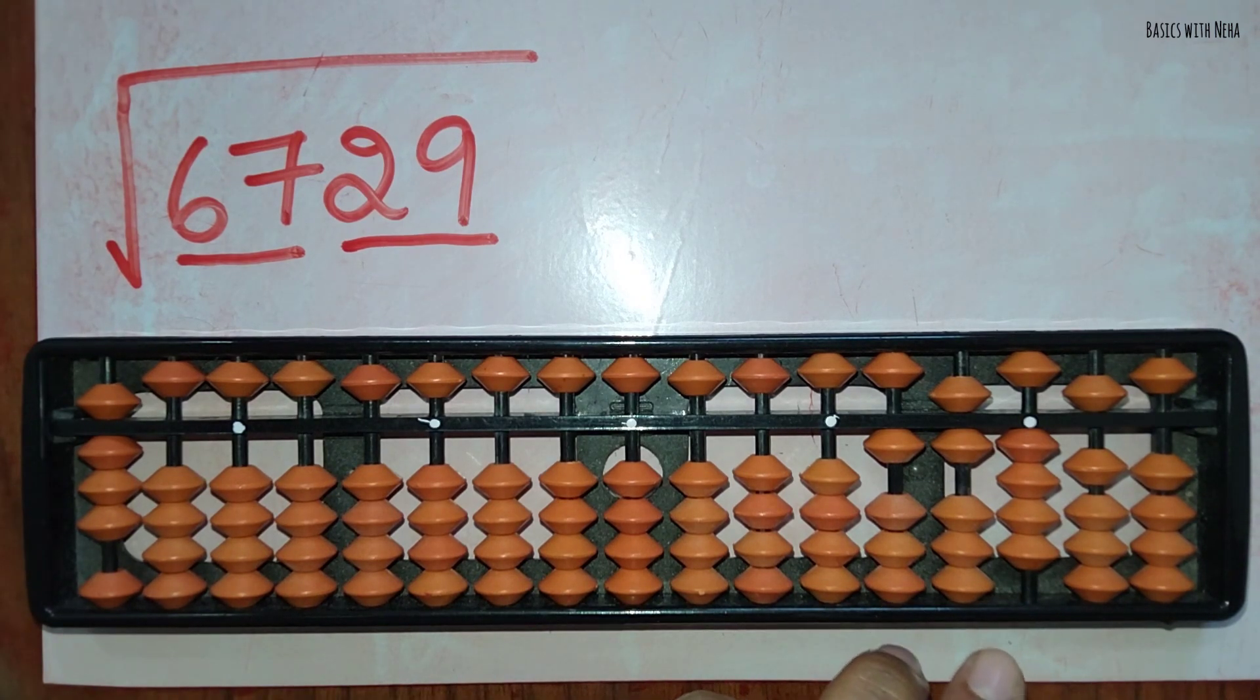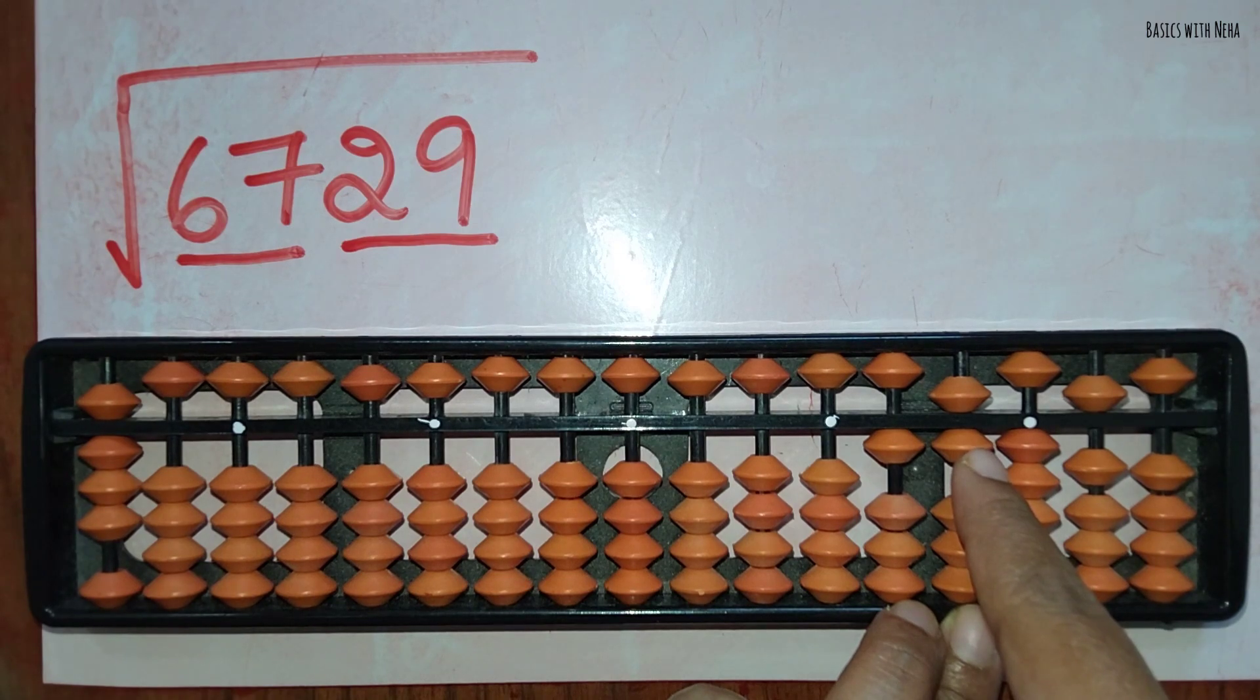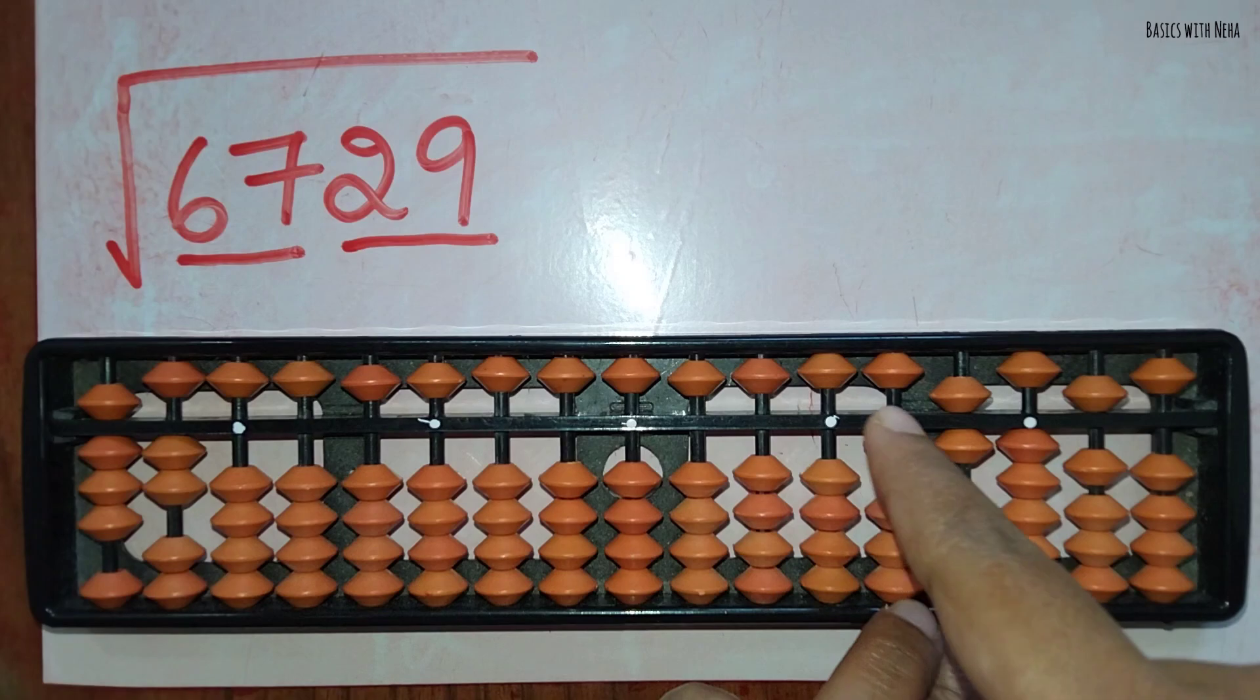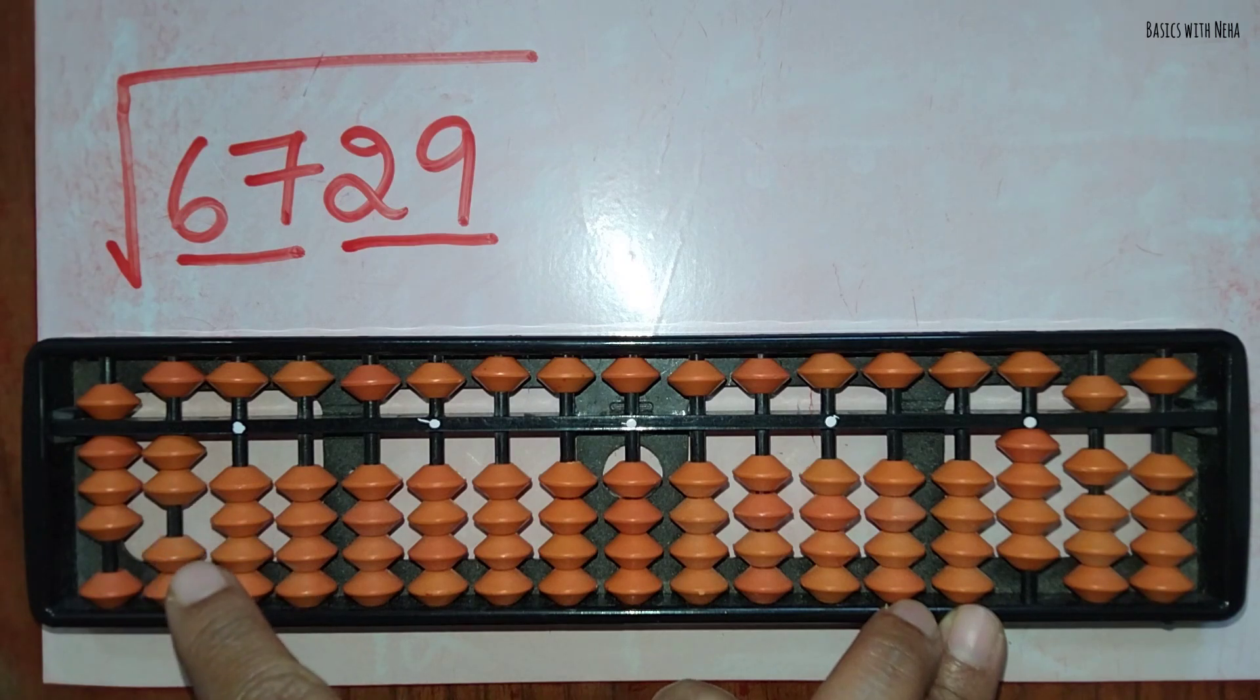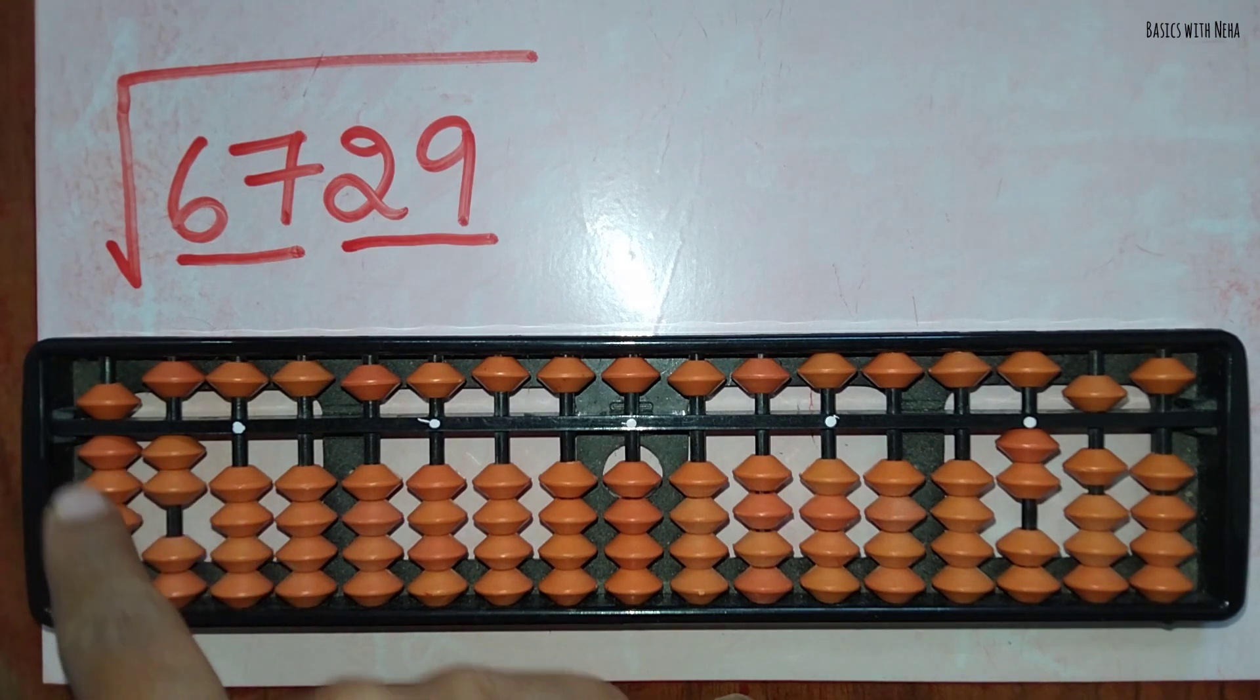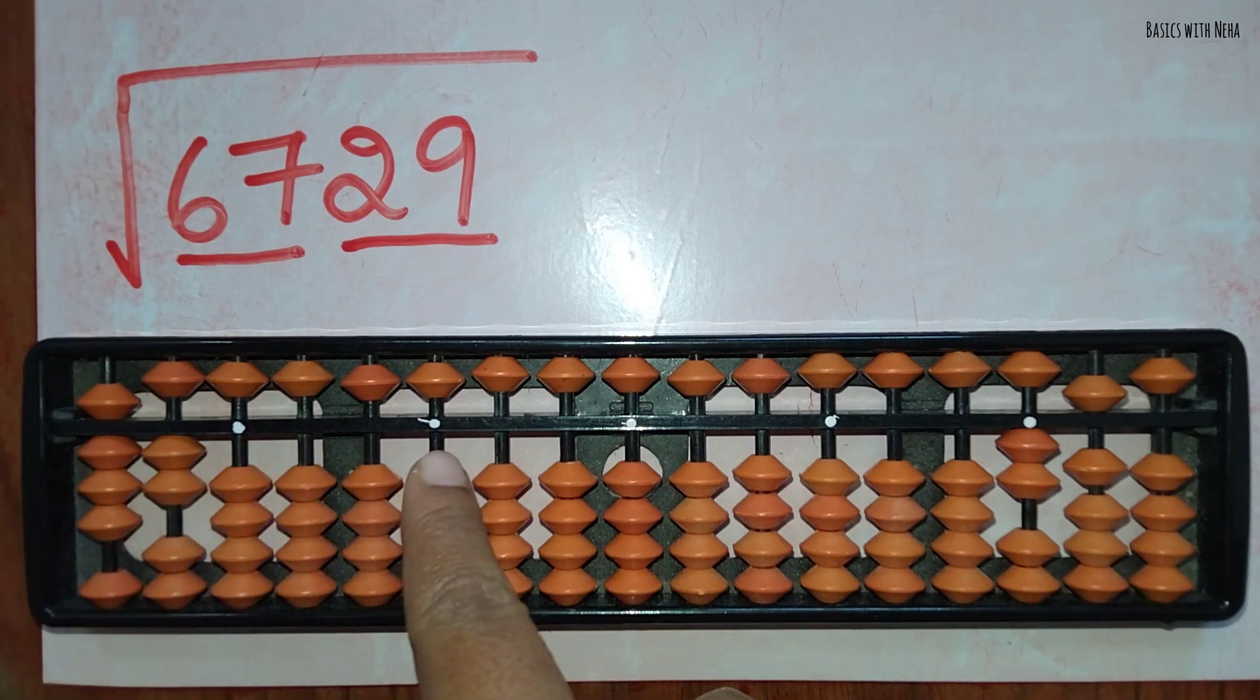Now it is 16. Eight twos are 16, one six sixteen. Two twos are four, four half is two. I'm going to remove two. So now I'm done with this. I already got the answer, it is 82. Now whatever I do will be in the decimal place.